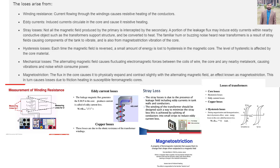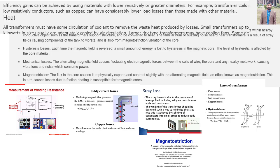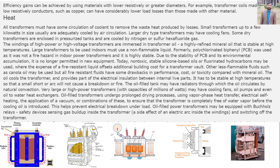Efficiency gains can be achieved by using materials with lower resistivity or greater diameters. For example, transformer coils made with low resistive conductors, such as copper, can have considerably lower load losses than those made with other materials.